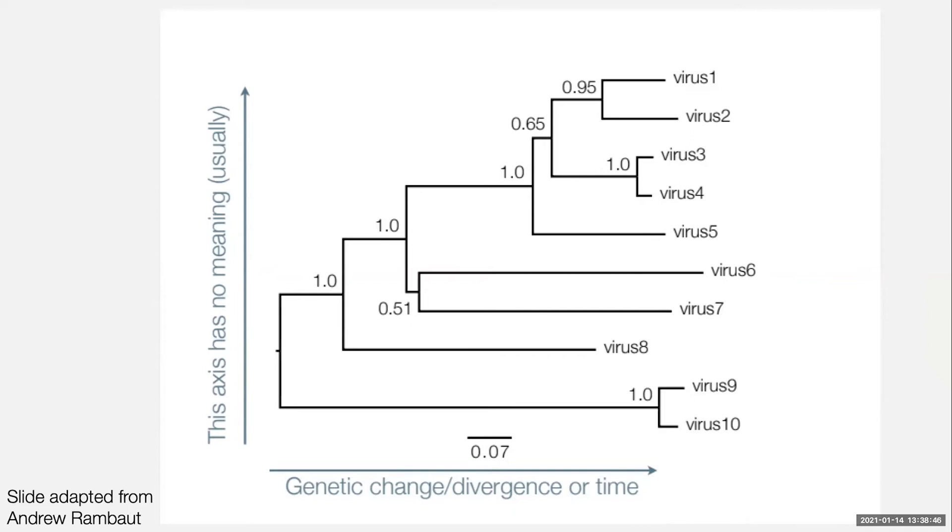The x-axis is the genetic change or divergence or time. So most of the SARS-CoV-2 trees that we look at, this x-axis is genetic divergence. So the length of that branch corresponds to the number of mutations along that branch.